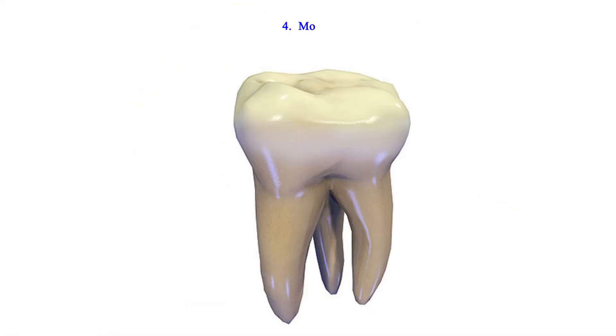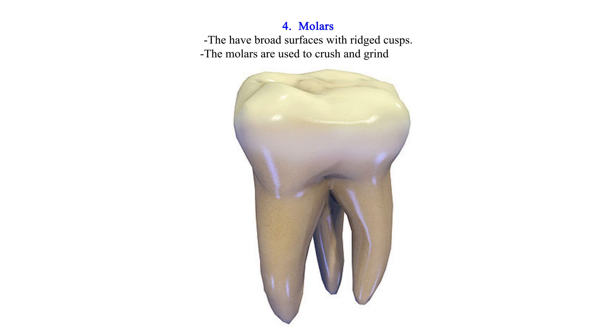Molars. They have broad surfaces with ridged cusps. The molars are used to crush and grind food.